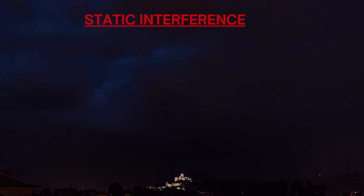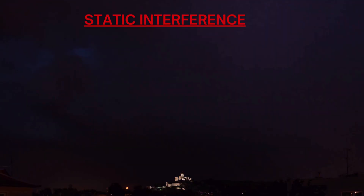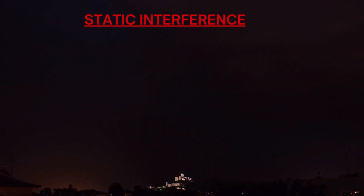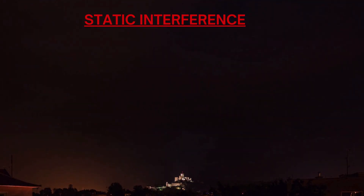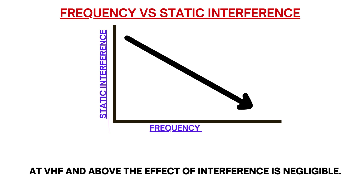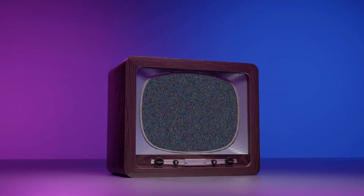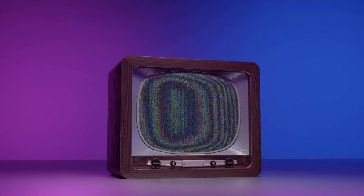Static interference: there is a large amount of static electricity generated in the atmosphere by weather, human activity and geological activity. The effect of static interference is greater at lower frequencies. At VHF and above, the effect of static interference is negligible. Static from whatever source reduces the clarity of communication and accuracy of navigation systems.